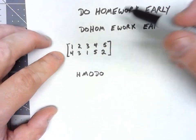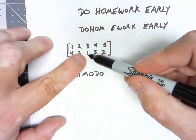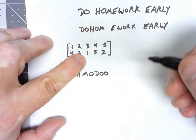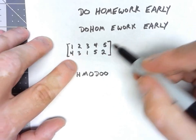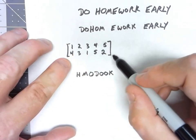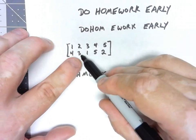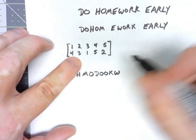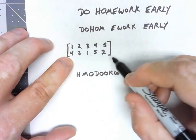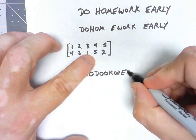Now, it might even be a little bit easier to say, in the first position, the third letter goes there, so I get an O. The second position, the fifth letter, the third position is the second letter, the fourth position is the first letter, and the fifth position is the fourth letter.